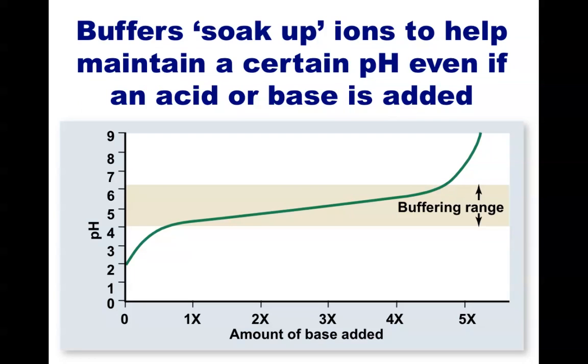For example, starting on the left of this graph, at pH 2.5, addition of a buffer causes a linear increase in pH. At a certain range, shown here as a tan bar, a buffer acts to donate extra hydrogen ions every time more base is added. Therefore, it takes a lot more base to increase the pH by a substantial amount while you are in the buffering range.